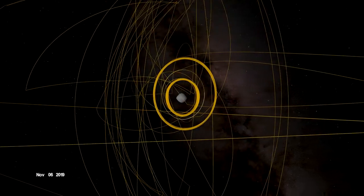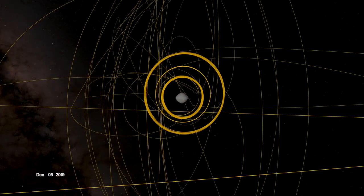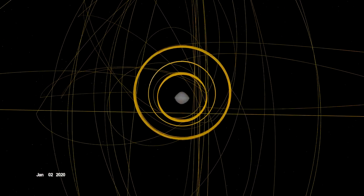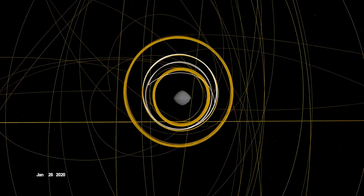OSIRIS-REx concluded its first year at Bennu back in orbit, circling the asteroid's terminator, or boundary between day and night. Here, outside forces acting on the spacecraft are balanced, allowing it to orbit within the same plane over time.